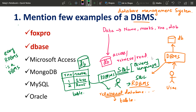Quick recap: we have data, we store it in a database, and we interact with the database through DBMS. There is a very important type of DBMS, which is widely used today. For the first question — mention a few examples of DBMS — you will say the examples of DBMS.